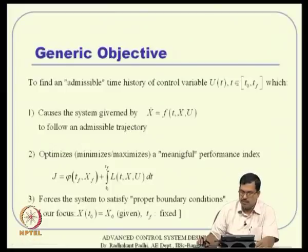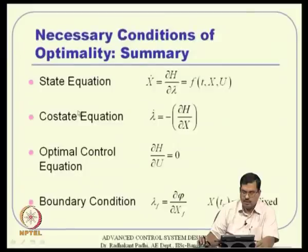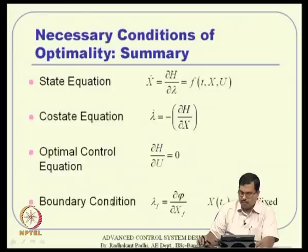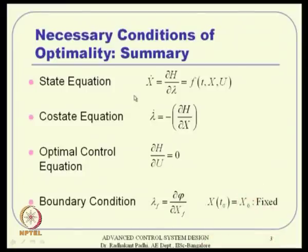Associated with this problem, we derived the necessary conditions of optimality — essentially three path conditions and one set of boundary conditions. The path constraints include two dynamic equations: the state equation and the costate equation, plus the optimal control equation which requires ∂H/∂u = 0 to be satisfied at all points in time.